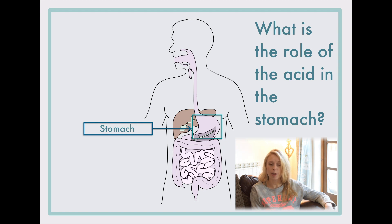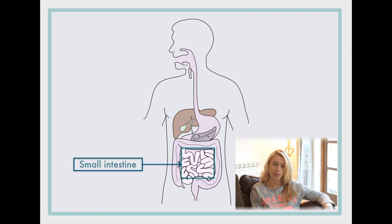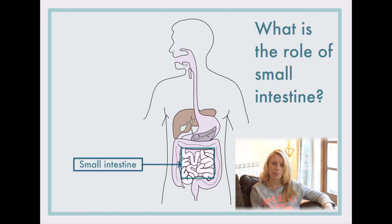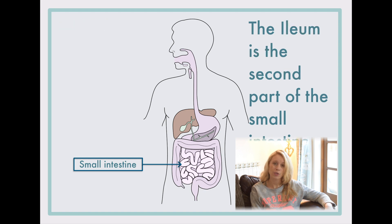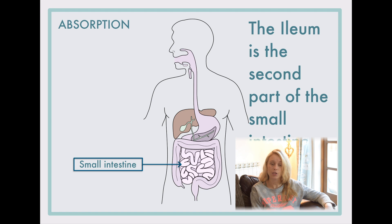After food has been in the stomach for up to four hours or so, it passes into the small intestine where a lot more processing takes place. Anything that we can digest will be fully broken down in the first part of the small intestine known as the duodenum. As you then move into the second part known as the ileum, that's where food starts to be absorbed. I've got a video on absorption which talks about how this part of the intestine is highly specialised for absorption.